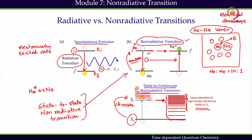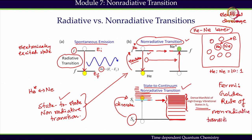In this module we will go over the quantum dynamics of both state-to-state and state-to-continuum non-radiative transitions, which will lead to the well-known Fermi's golden rule. We will then examine the limitations of Fermi's golden rule and try to overcome them with the help of a rigorous treatment using quantum dissipative dynamics.